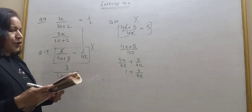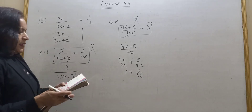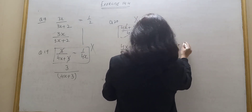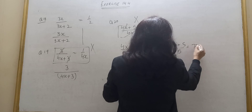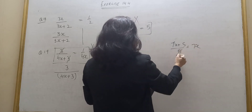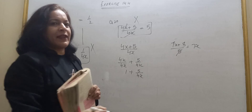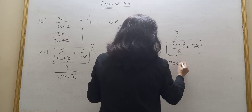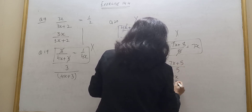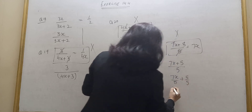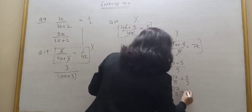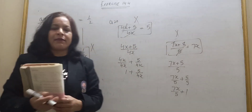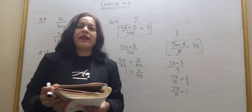Question number 21 is similar: 7x plus 5 upon 5x simplifies to 7x upon 5x plus 5 upon 5x, written as it is. Thank you.